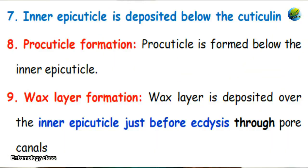Below the cuticulin layer, another epicuticle layer called the inner epicuticle is formed and deposited below the cuticulin layer. Below this inner epicuticle, the procuticle formation occurs. The next step is the formation of the wax layer, which is deposited over the inner epicuticle just before ecdysis through the pore canals. The tenth step is molting or ecdysis.